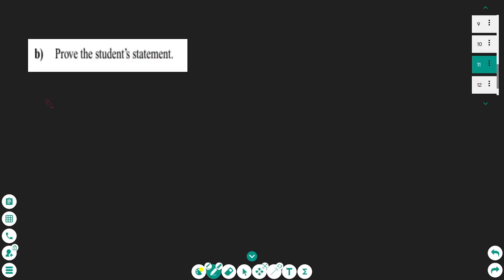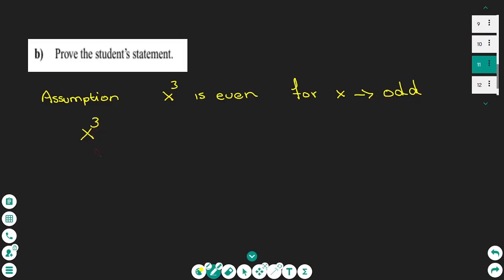The assumption we make is that x to the power of three is even for an x value that is odd. Working with this case, if x is odd we can write x as 2k plus 1. So x to the power of 3 gives us 2k plus 1 to the power of 3, and we can expand the bracket as 2k plus 1 times 2k plus 1 squared.